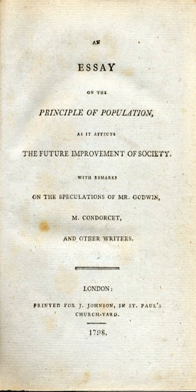A Summary View on the Principle of Population was published in 1830, identified as by Rev. T. R. Malthus, AM, FRS. Malthus wrote a summary view for those who did not have the leisure to read the full essay and, as he put it, to correct some of the misrepresentations which have gone abroad respecting two or three of the most important points of the essay. A Summary View ends with a defense of the principle of population against the charge that it 'impeaches the goodness of the deity, and is inconsistent with the letter and spirit of the scriptures.' This was Malthus's final word on his principle of population. He died in 1834.